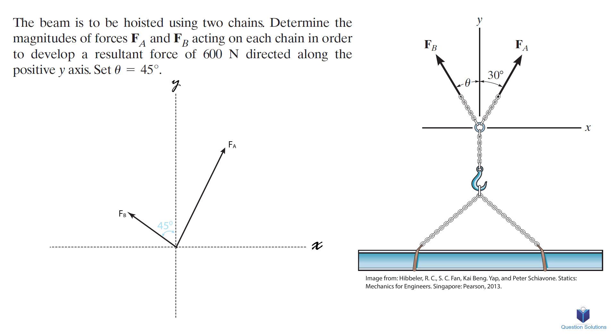We will set theta to 45 degrees as stated in the question and we will label the other angle as well. Now let's draw the resultant force of 600 newtons along the positive y-axis as said by the question.